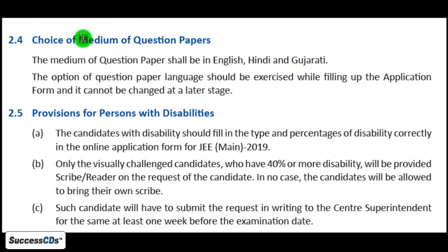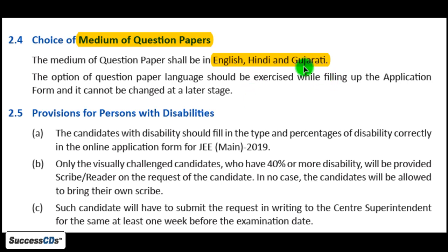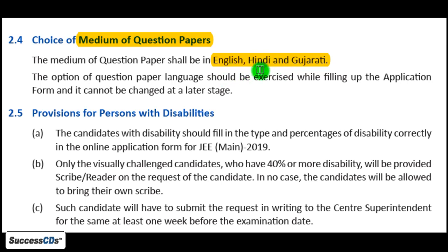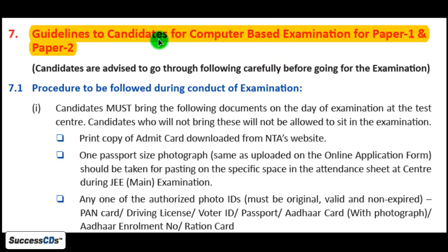Another important thing is the medium of question papers. Question papers will be in English, Hindi, and Gujarati. If a candidate selects an examination center located in Gujarat, they can also select Gujarati as the medium. Otherwise, in all other states, students have two options: English or Hindi.